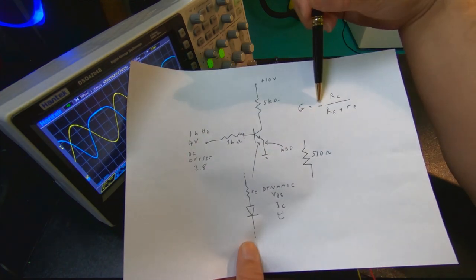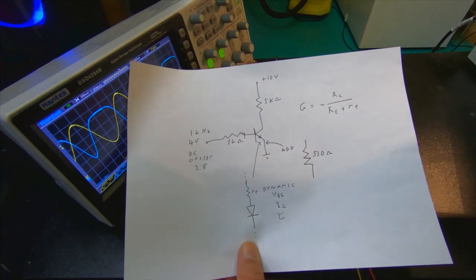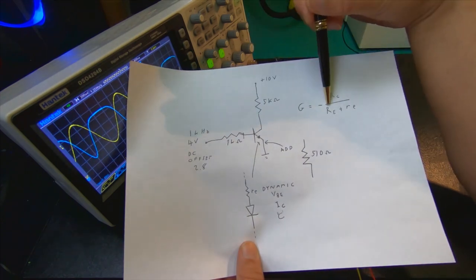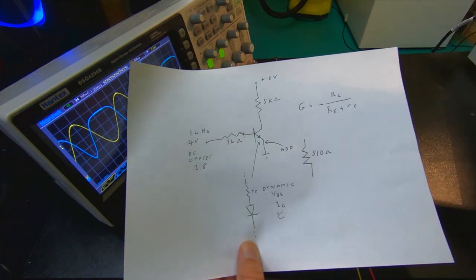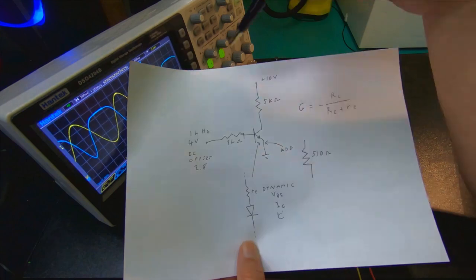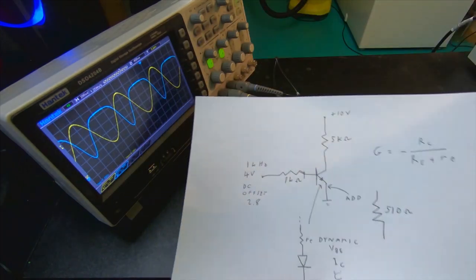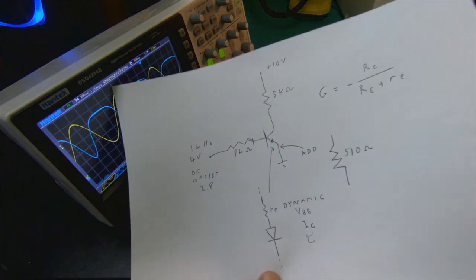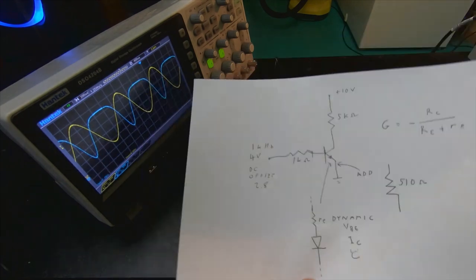And then it's on a negative gain, which basically means it inverts the signal, not that it has a dampening effect. So as you see in the scope, when it's up, then it's down, and when it's down, then it's up.